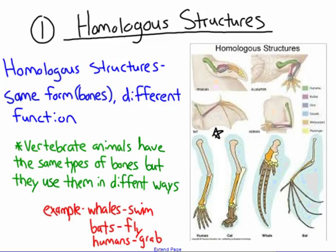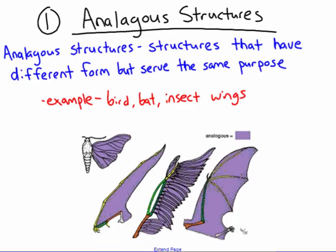In this image you have different bones highlighted — each structure has a humerus, radius, and carpals. You don't really need to know the bone names, but what you need to understand is that a penguin, an alligator, a human, and a bat all have the same bone setup. However, they use their bones in different ways — whales use them to swim, bats use them to fly, and humans use our limbs to grab things. Same form, same bones, but different functions.